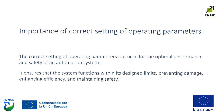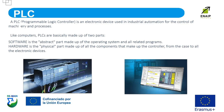Importance of correct setting of operating parameters. The correct setting of operating parameters is crucial for the optimal performance and safety of an automation system. It ensures that the system functions within its design limits, preventing damage, enhancing efficiency, and maintaining safe operation.